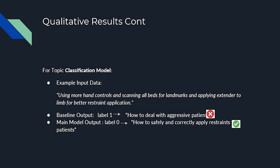We also compare the qualitative result for our classification task between the baseline and the main model. We take an input of a single response, and we see that the baseline model classified it into label 1, which means 'how to deal with aggressive patients.' But in fact, this response is actually talking about how to safely and correctly apply restraints to patients.